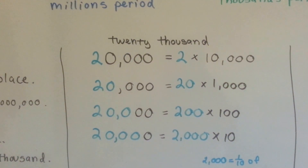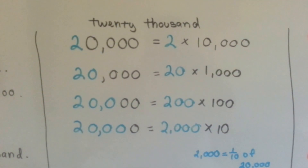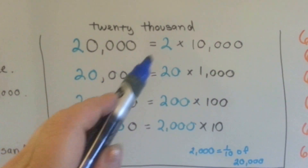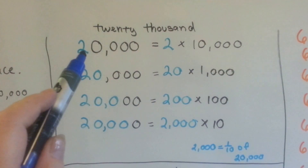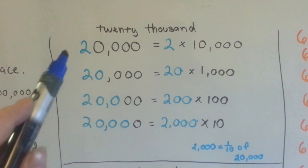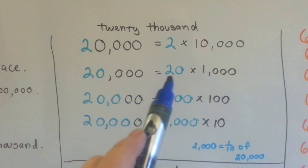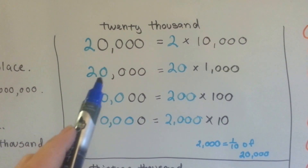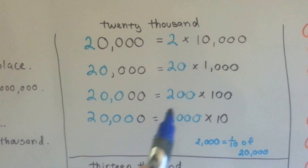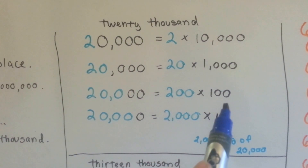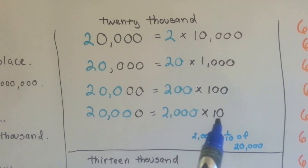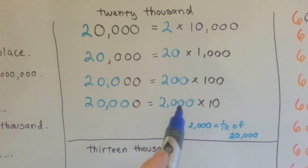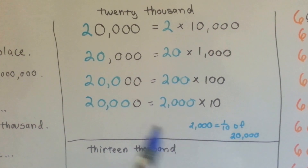When we look at twenty thousand, we can think of it as two times ten thousand, or twenty times one thousand. Twenty thousand could be twenty one-thousands, or two hundred one-hundreds, or two thousand tens. That tells us that two thousand is one tenth of twenty thousand.